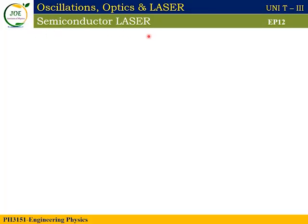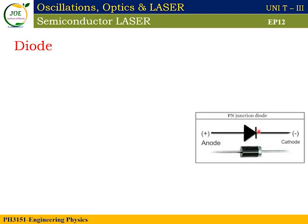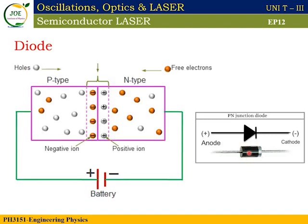Semiconductor laser working principle — the PN junction diode. The diode symbol has a triangle and line; one terminal is called anode and another terminal is called cathode. Physically, a PN junction diode has two semiconductors: one P-type semiconductor and one N-type semiconductor. In the P-type semiconductor, there is an absence of electrons; the absence of electrons is called holes. The P-type semiconductor majority carriers are holes, minorities are electrons.